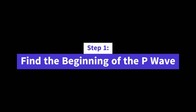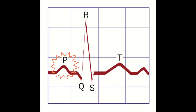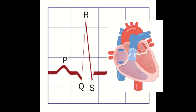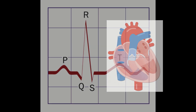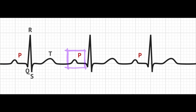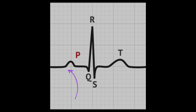Step 1: Find the beginning of the P wave. The P wave is the first wave in a normal EKG strip and it represents the electrical activity that causes the atria to contract. To identify the beginning of the P wave, look for the first upward deflection of the wave on the EKG strip.